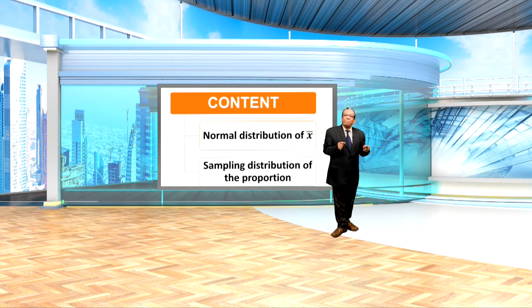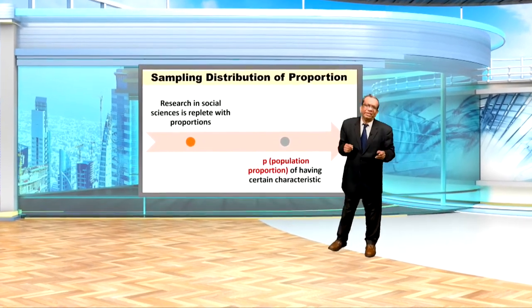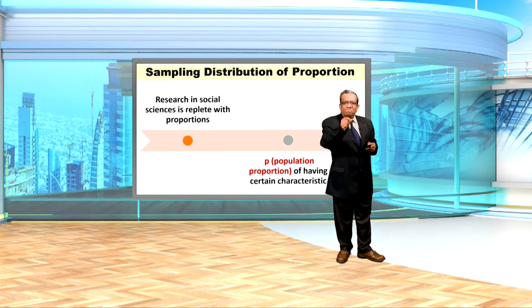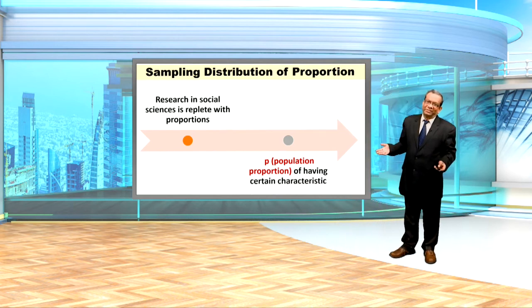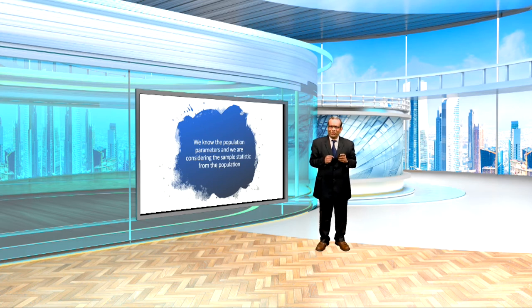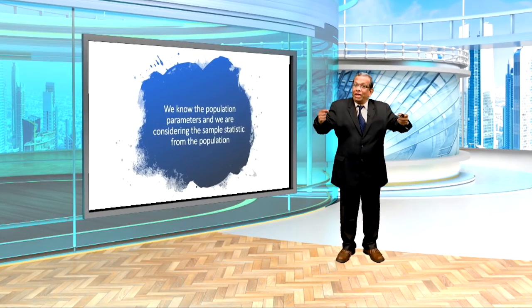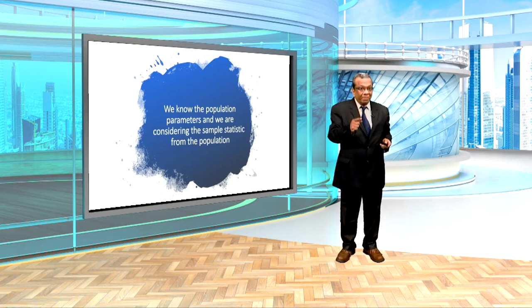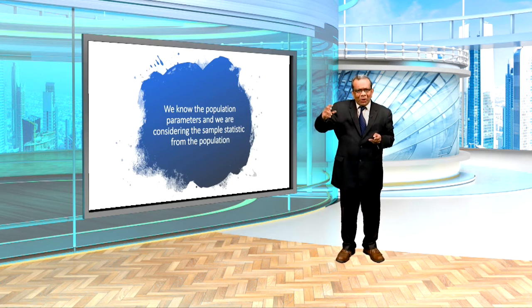Today we will be discussing the sampling distribution of proportion. Research in social sciences is replete with proportions, generally represented by p, which is the population proportion of having a certain characteristic. Throughout this lecture, we will keep one important point in mind: we know the population parameters and we are considering the sample statistic from the population. That means we know the population mean and population standard deviation, and then we try to find out how we can derive sample statistics from the population.